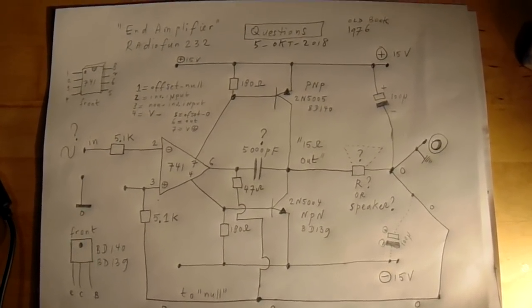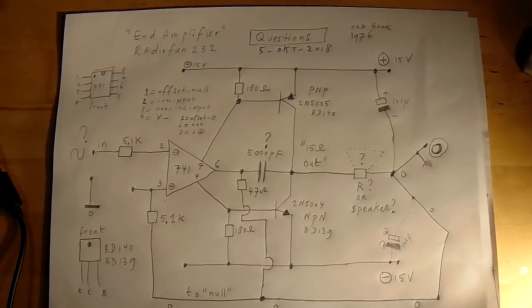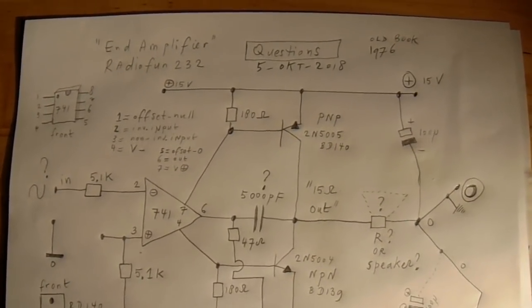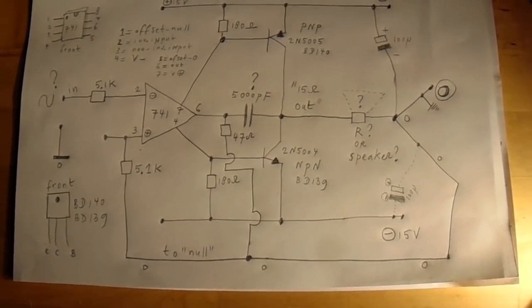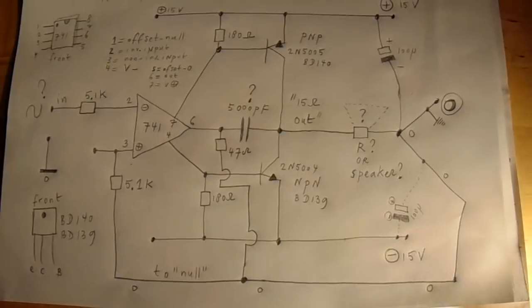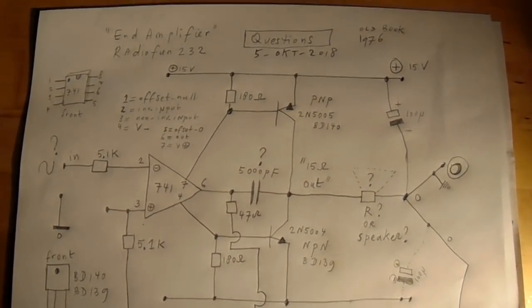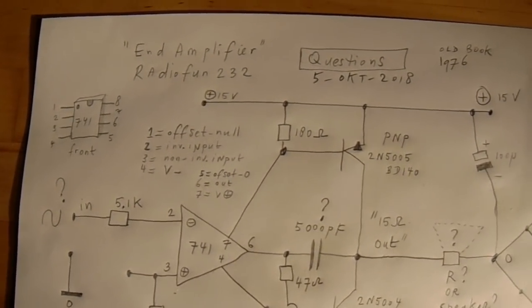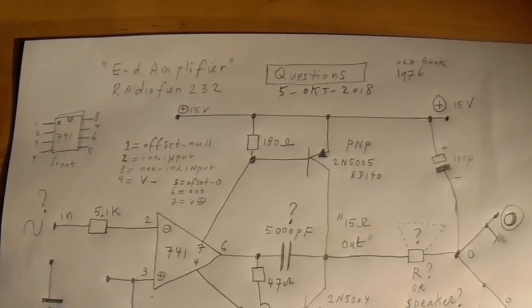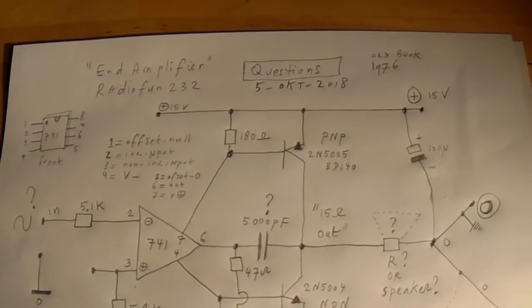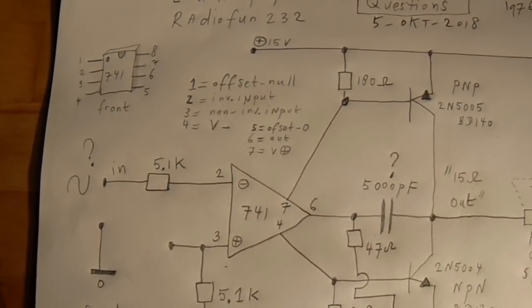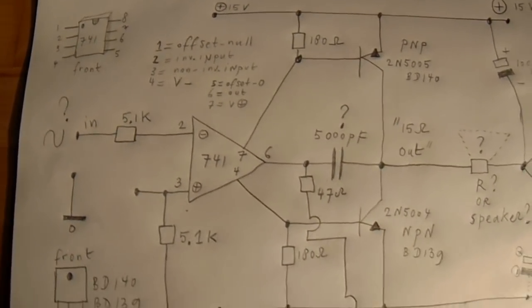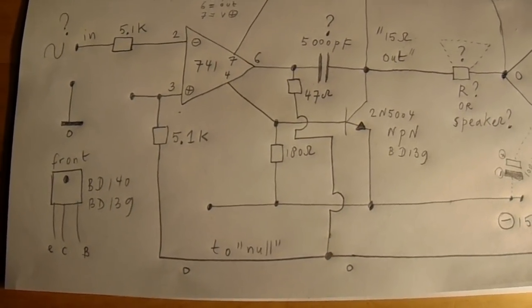I published this circuit on October 5th, 2018, and the only aim from that circuit was an experiment. It was from an old book from 1976, and I'm almost sure it had to be an amplifier without quiescent current. That was the aim of the use of the 741, but the idea was to do an experiment.